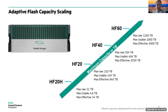Going up to just over a petabyte of raw capacity in the HF60, which is about a petabyte usable, and five petabytes at 5x data reduction or two petabytes at 2x data reduction, depending on what your data set is.